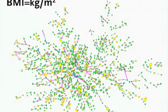BMI is the weight in kilograms divided by the square of the height in meters. A yellow node represents an obese person with a BMI greater than 30, and a green node represents a non-obese person.